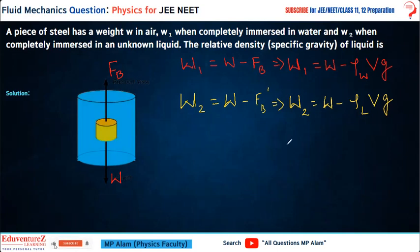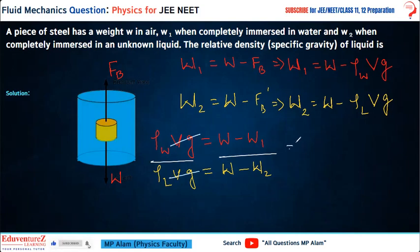Now let's write both equations properly. First equation: ρw × V × g = w - w1. Second equation: ρl × V × g = w - w2. If we divide these two equations, you'll see that V × g cancels out, giving ρw/ρl = (w - w1)/(w - w2).